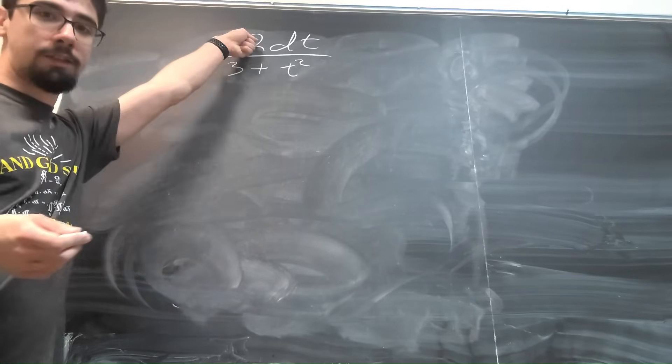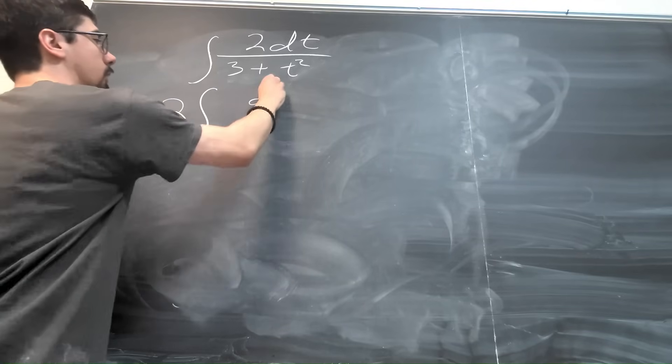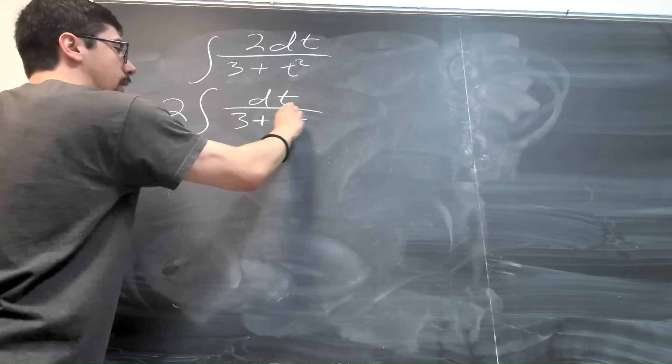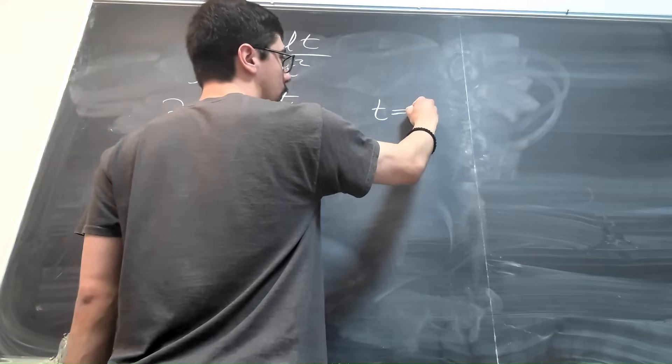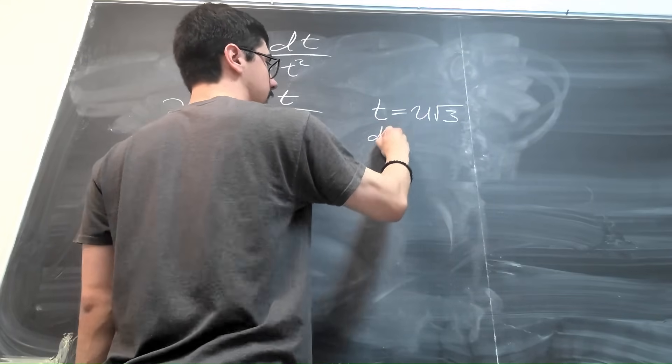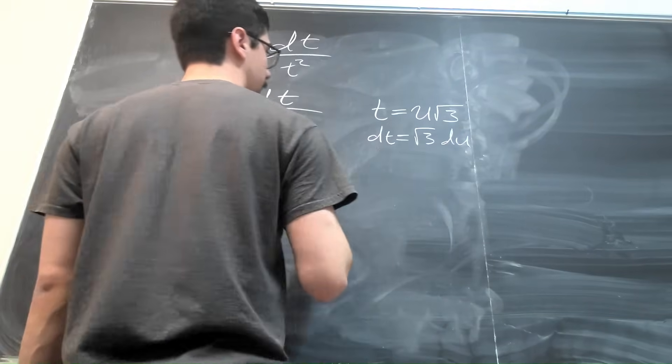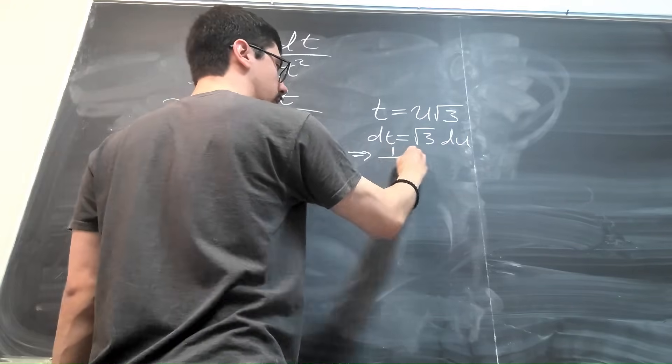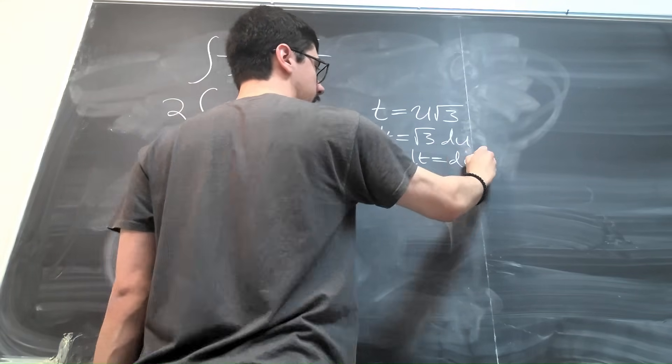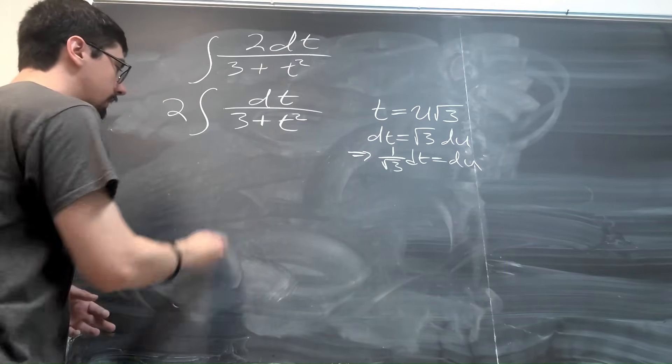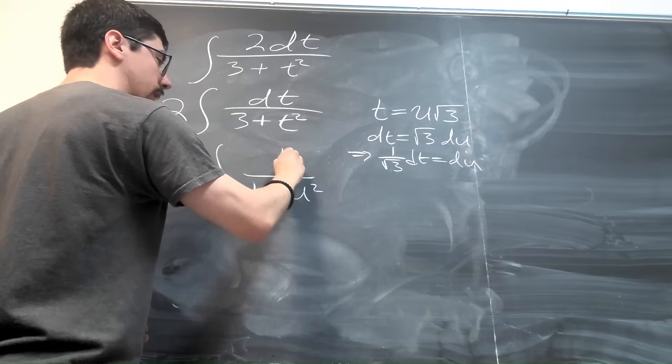So what I'm going to do is I'm going to take this 2 out of the top, because it's just a scalar multiple, so we're allowed to do that for integrals, and that gives us 2 times the integral of dt over 3 plus t squared. And the trick here is to do the substitution of the following form. We let t equal u times the square root of 3, which means that dt is equal to square root of 3 du, which implies that 1 over square root of 3 dt is equal to du. And so when we do that here and clean things up a little bit, that's going to give us 2 over square root of 3 times the integral of 1 over 1 plus u squared du.